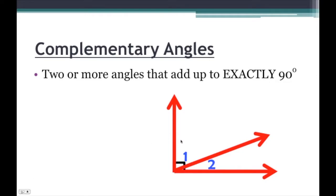So here we have a set of complementary angles. Angle 1 is complementary to angle 2. How do we know that? Because we see here that they share this side and together their other sides form a right angle. We can tell it forms a right angle because of the right angle box here. So let's say angle 1 is 64 degrees. What exactly is the measure of angle 2? So let's call that x degrees — how do we go about finding the measure of this remaining angle?